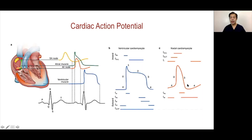On the right side of the panel, you will see a different waveform — the action potential seen in specialized conduction tissue. You will see this waveform in the sinus node, the AV node, and even in the His-Purkinje system.